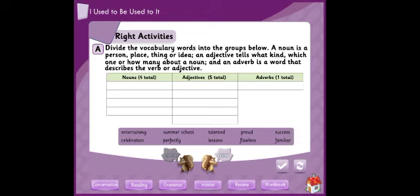An adjective tells what kind - it describes a noun, which one, or how many about a noun. And an adverb is a word that describes the verb or adjective. The adverb describes the verb or adjective, while the adjective describes the noun. How do I distinguish between adjective and adverb? We know that the adverb ends with L-Y.